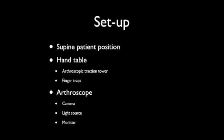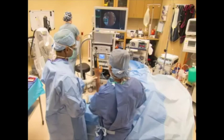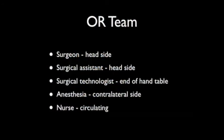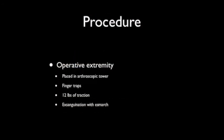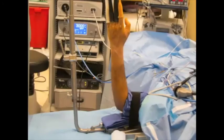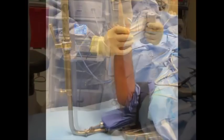To perform the procedure, the patient is placed in the supine position. After general anesthesia is established, the equipment and operative team are assembled around the patient, including a hand table and arthroscopic traction tower. The operative extremity is placed in the arthroscopic tower using finger traps and 12 pounds of traction is applied. The extremity is exsanguinated with an esmarch.